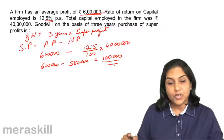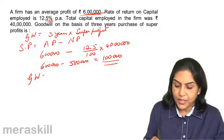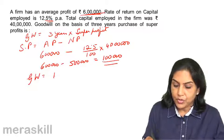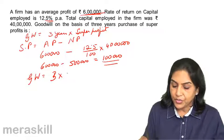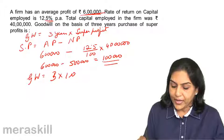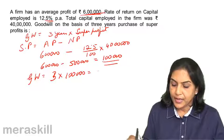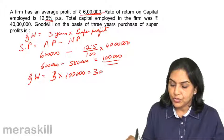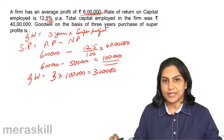Therefore, goodwill is equal to 3 years into 1 lakh, which equals 3 lakhs.